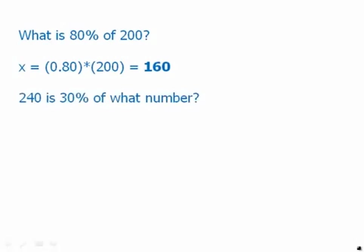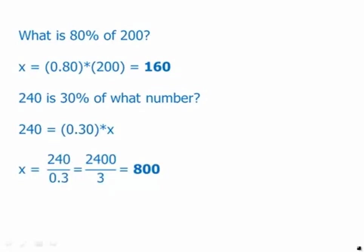Similarly: two forty is thirty percent of what number? Two forty equals 0.3 — thirty percent as the multiplier 0.3 — times x, the unknown number. Translating to math, we divide, move the decimal place over, and divide out to get eight hundred.